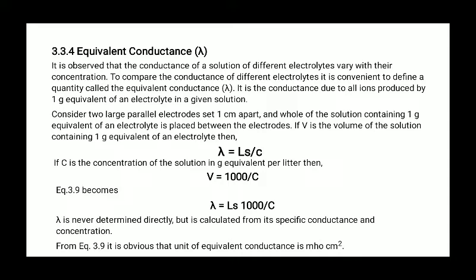Consider two large parallel electrodes set 1 cm apart and whole of the solution containing 1 gram equivalent of an electrolyte is placed between the electrodes. If V is the volume of the solution containing 1 gram equivalent of an electrolyte, then lambda is equal to LS into V. If C is the concentration of the solution in gram equivalent of an electrolyte, then V is equal to 1000 upon C. Then, the equation becomes lambda is equal to LS 1000 upon C. Lambda is never determined directly but is calculated from specific conductance and the concentration.